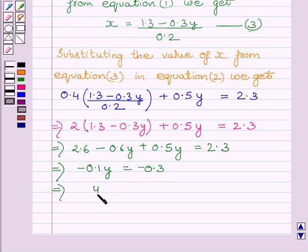Or we can say y is equal to minus 0.3 upon minus 0.1, which is equal to 3. So y is equal to 3.